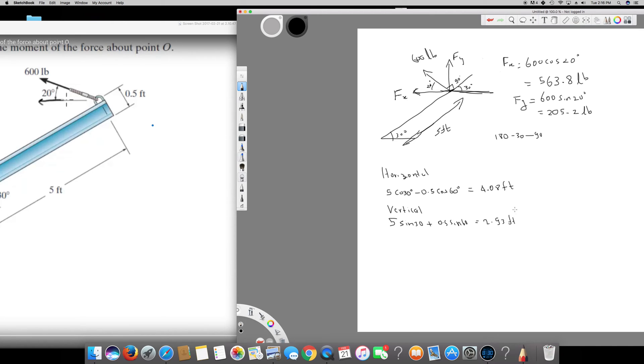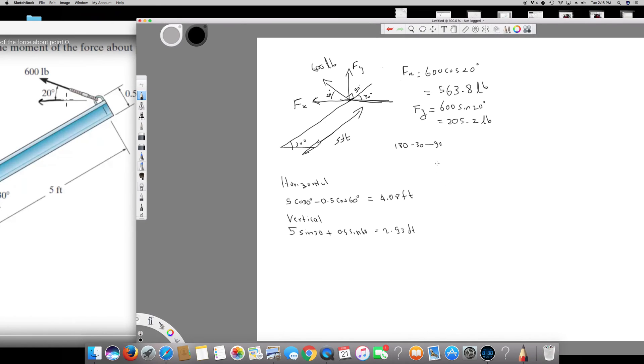Now I can calculate the total momentum. So sigma Mo is going to be equal to horizontal distance multiplied by vertical force, 4.08 times 205.2.